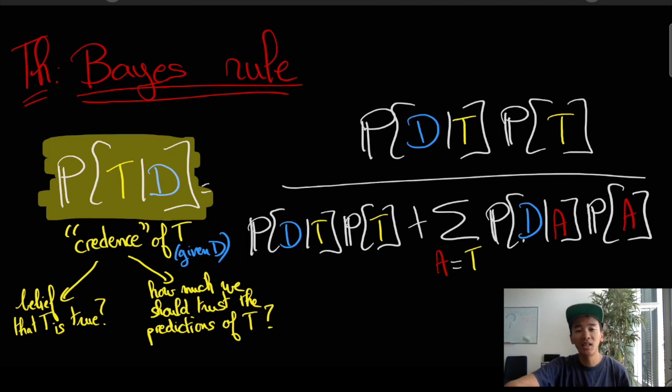So that's really what we are aiming at in Bayes rule. What we really want to find out is how much we should trust any given theory. And it sounds like something we should be doing for science as well.